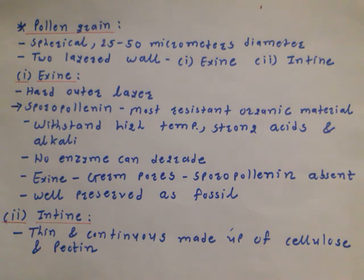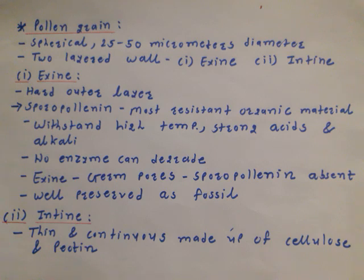These are some features of the exine layer of pollen grain. The second layer is intine. Intine is actually a thin, continuous layer made up of cellulose and pectin. So in the structure of a typical pollen grain, two layers — exine and intine — are observed.